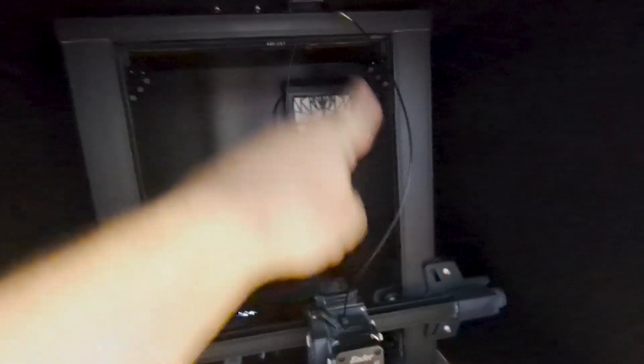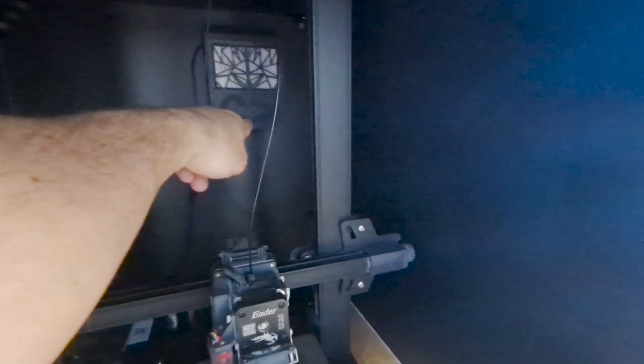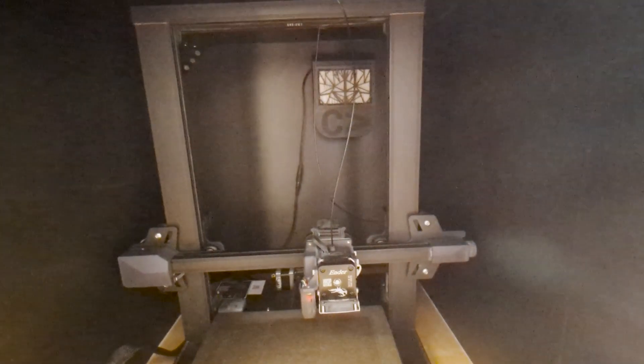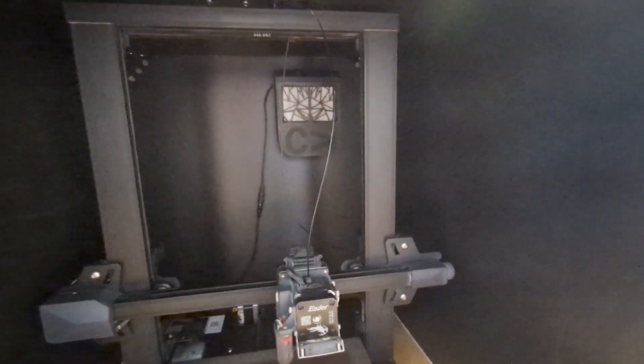In this particular enclosure, we have a recirculating fan. This one actually recirculates the air and it filters with a HEPA and a charcoal filter to reduce particulate inside. The charcoal also helps to reduce fumes and smells that occur from 3D printing.